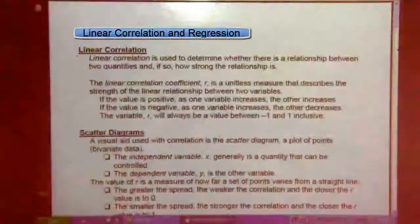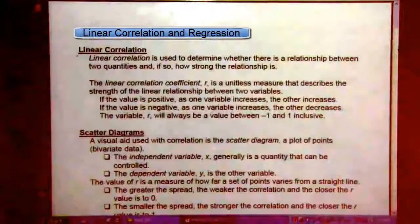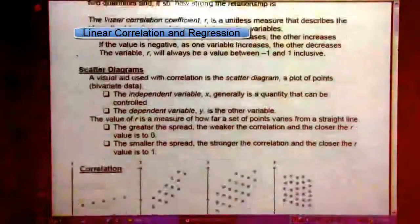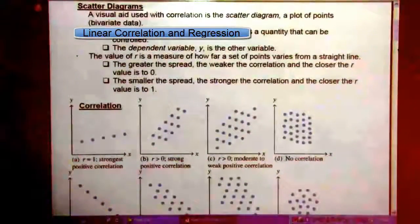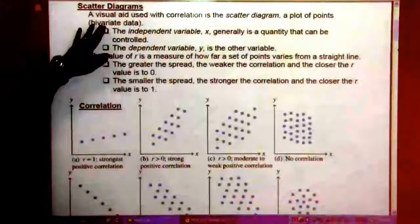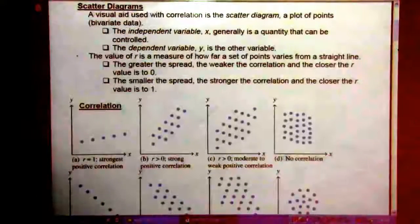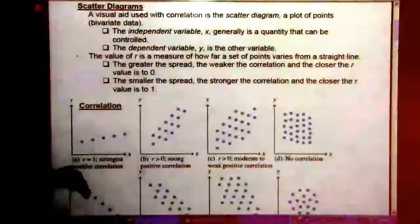So scatter diagrams, that's a visual aid used with correlation. That's the scatter diagram. It's a plot of the points by varying two variable data. The independent variable X generally is a quantity that can be controlled.